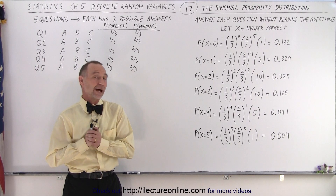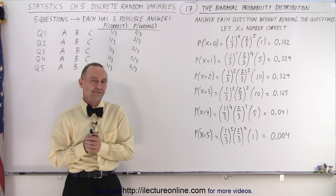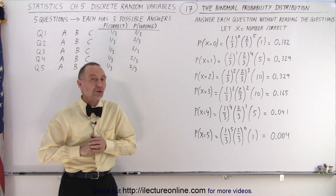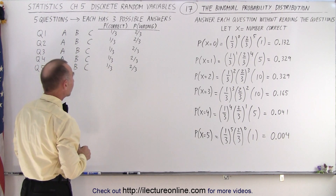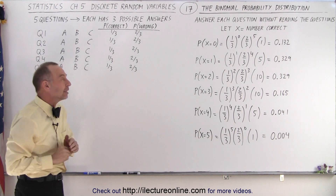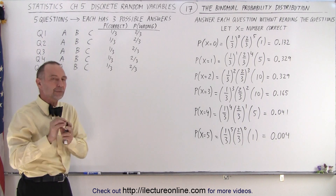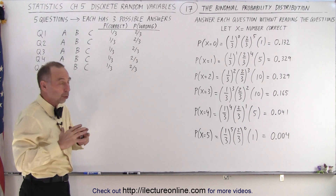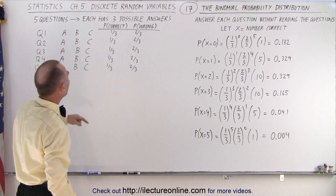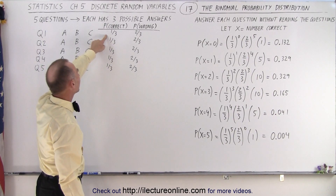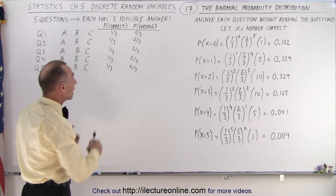Welcome to ElectronLine. We are now ready to talk about the binomial probability distribution. Let's go back to the example we showed in the previous video, where we had a quiz with five questions. Each question had three possible answers, and only one of the three was correct in each case. So if we randomly circled the answer without reading the questions, in each case there was a one-third probability that we picked the right answer and a two-thirds probability that we picked the wrong answer.